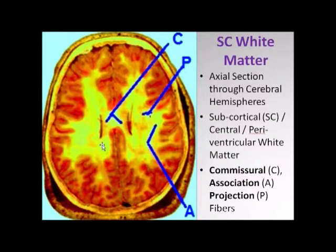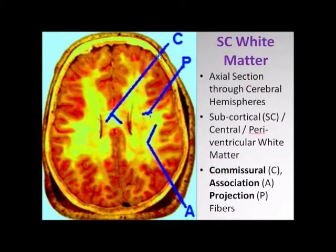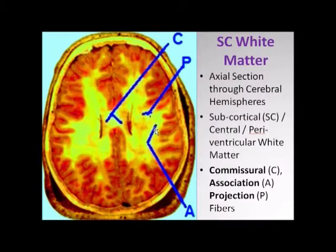For the ease of understanding, this white matter has been divided into three broad groups: the so-called commissural fibers, the projection fibers, and association fibers.